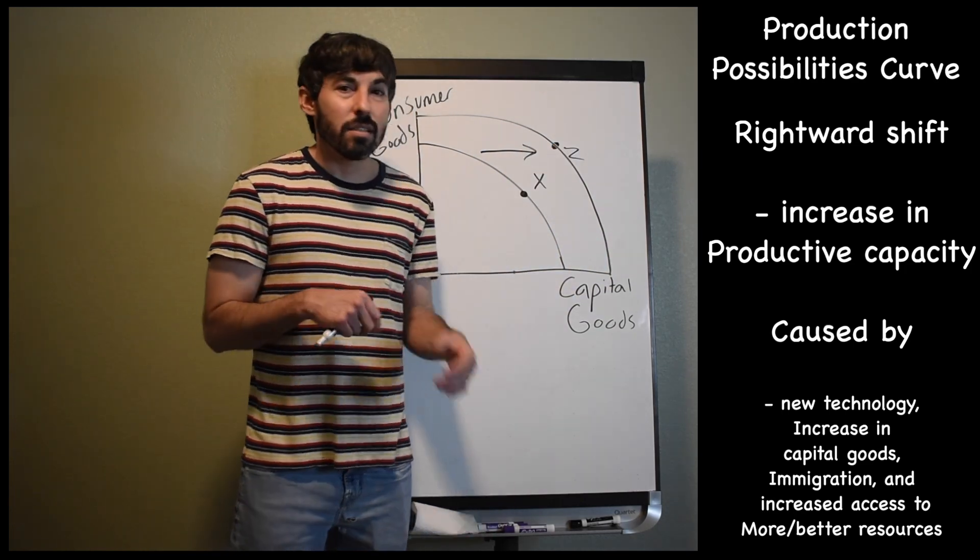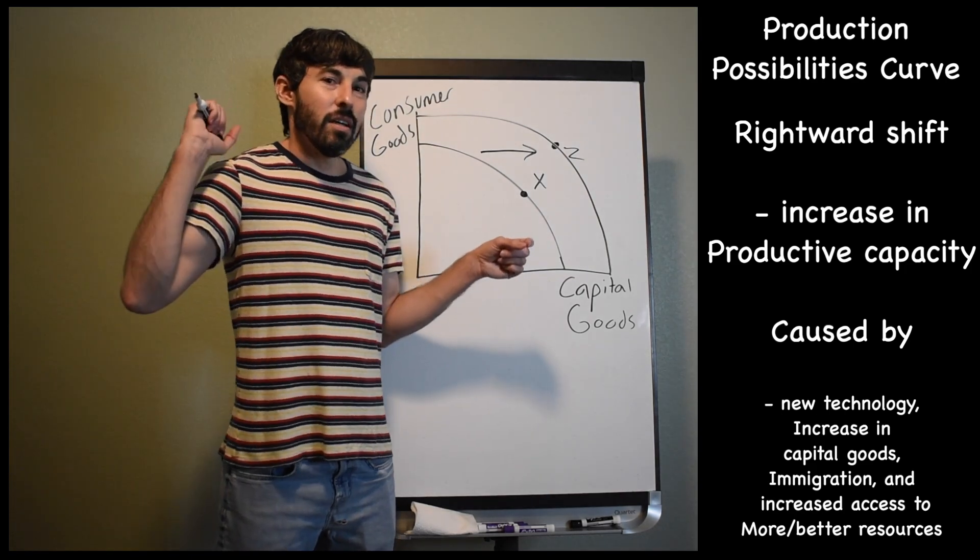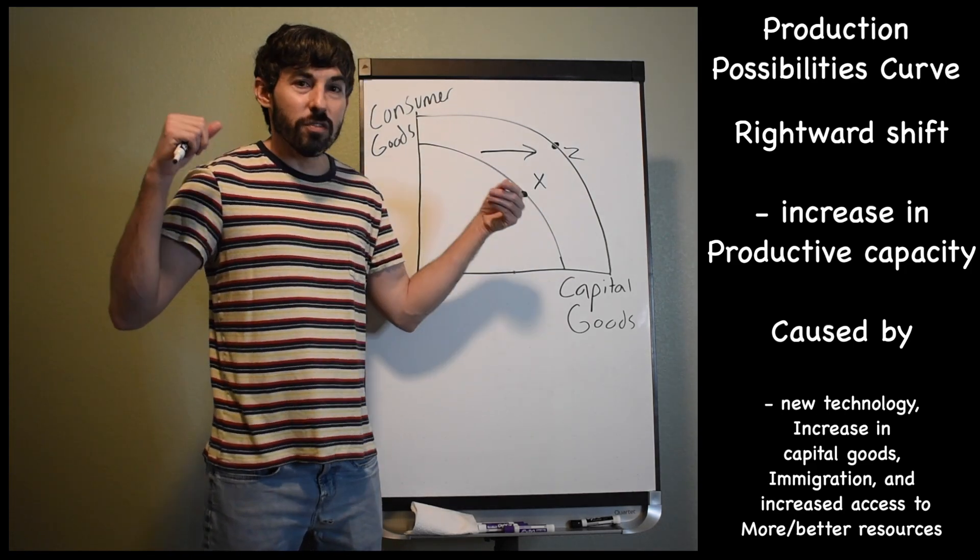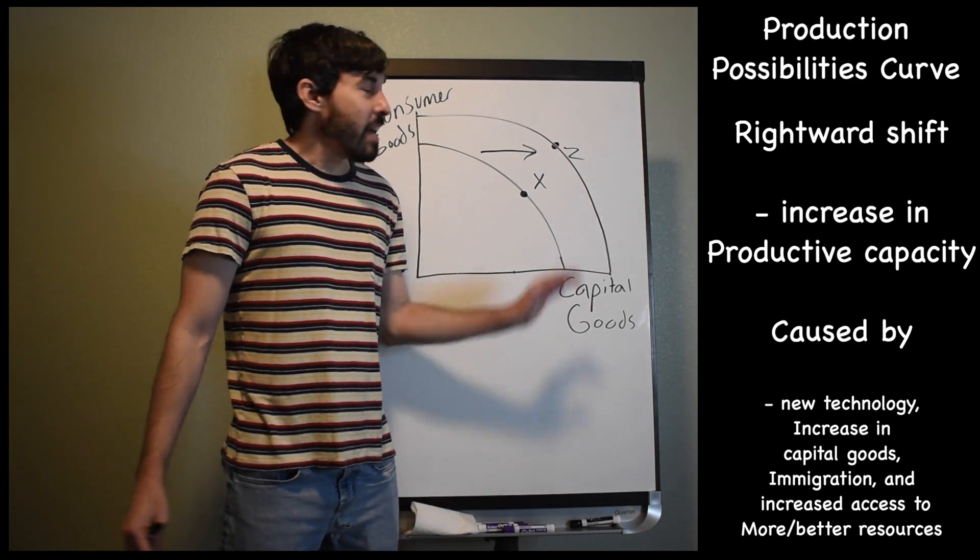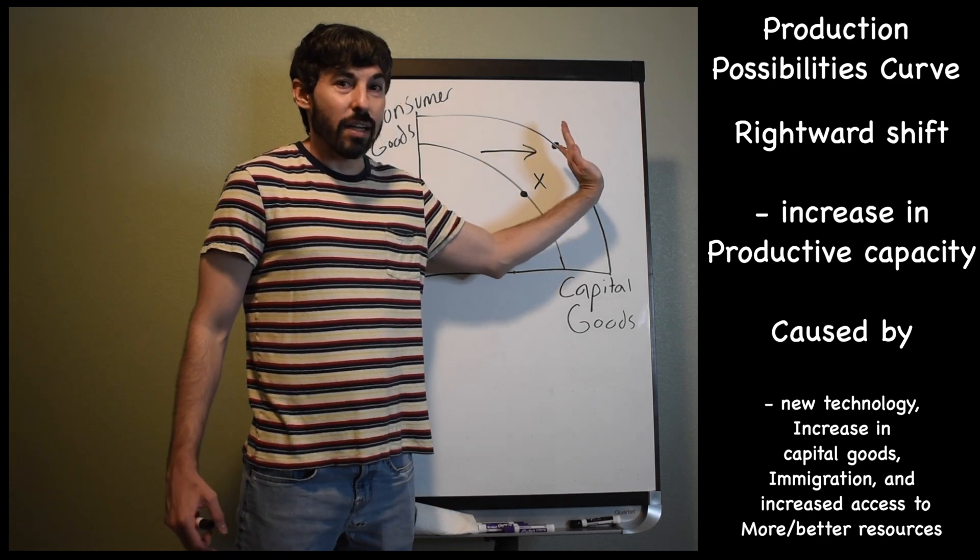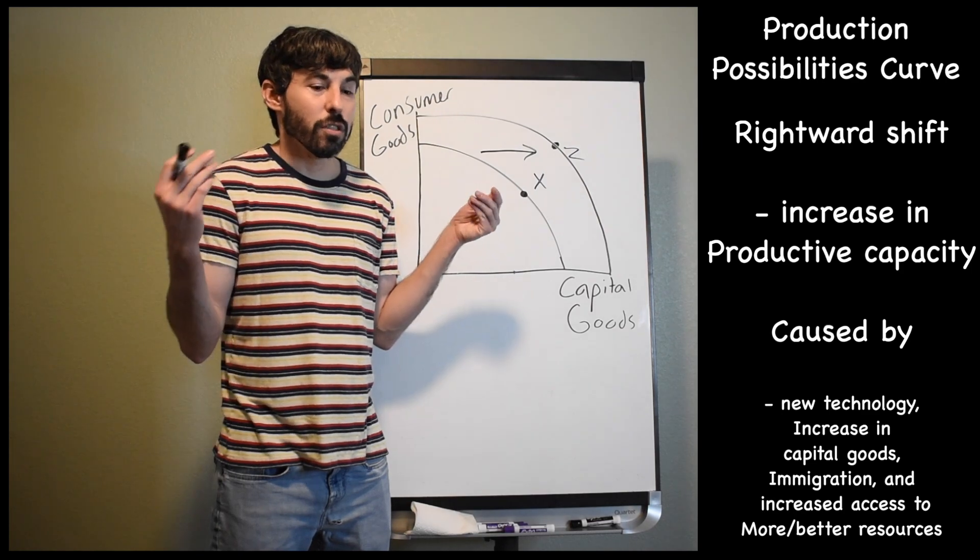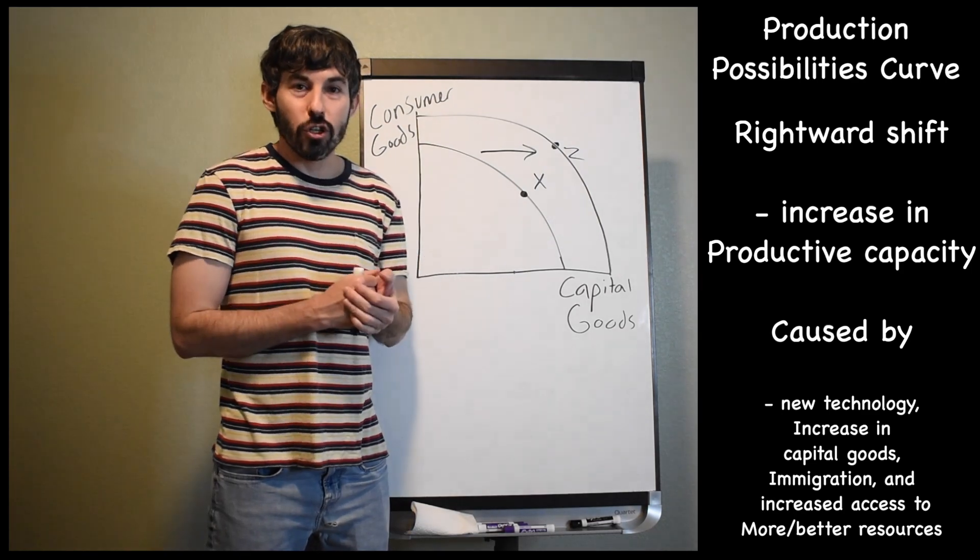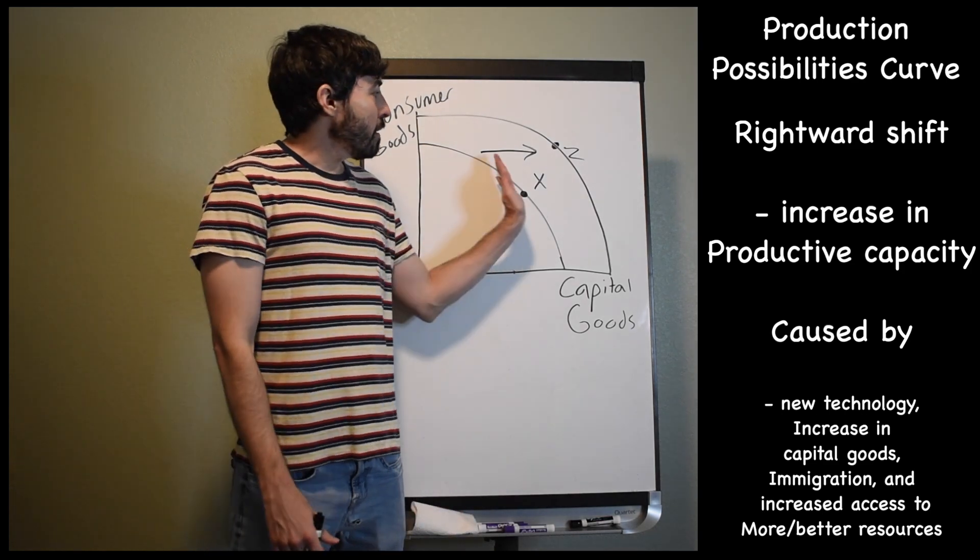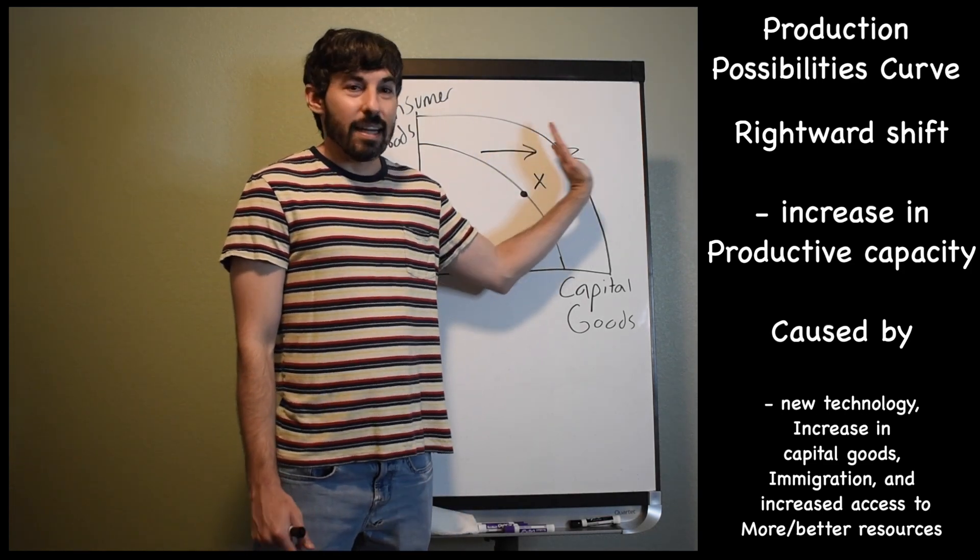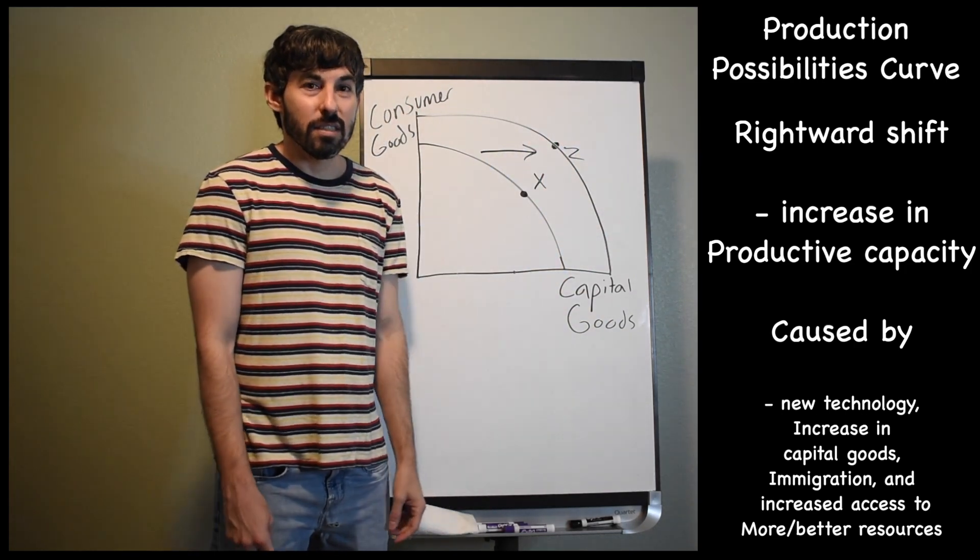Other things that could cause this. Maybe there's immigration. I told you a minute ago that people leaving a country would make that country produce less goods and services. Well, wherever those people are ending up, now have more workers that can produce more stuff. And the curve could shift out to the right. It could also be an increased access to resources. Maybe a country was formerly sanctioned and not allowed to trade with other countries. Once those sanctions are lifted, we would expect that country to be able to produce more goods and services and have an increase in their productive capacity now that they have access to resources that they formerly did not.